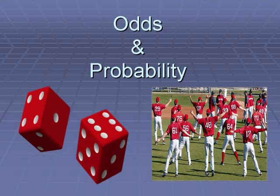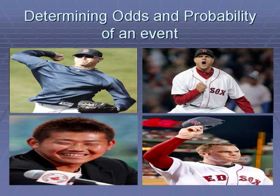Here's a scenario. Let's say we have four baseball players: Josh Beckett, Daisuke Matsuzaka, Jonathan Papelbon, and Jon Lester. We take their names and put them into a hat — maybe the hat Jon Lester is holding right now.